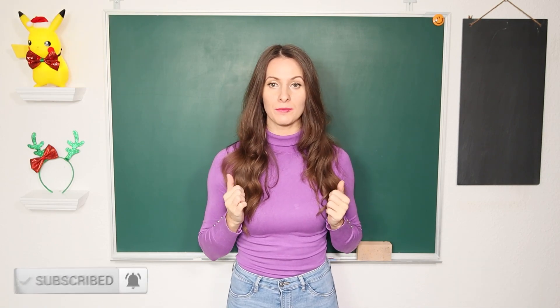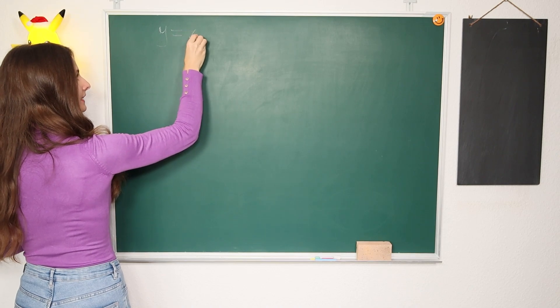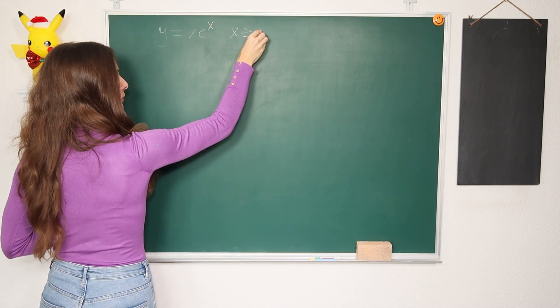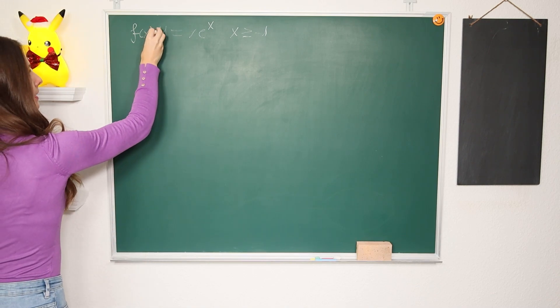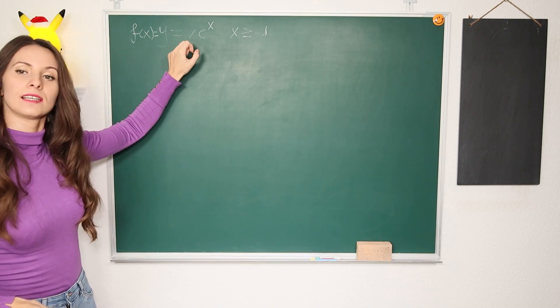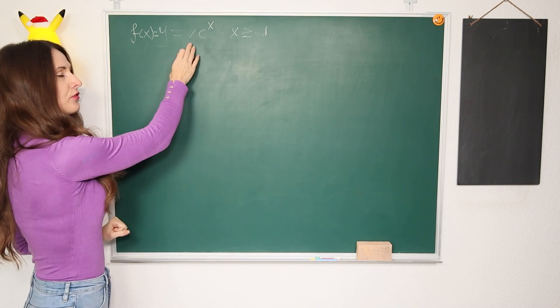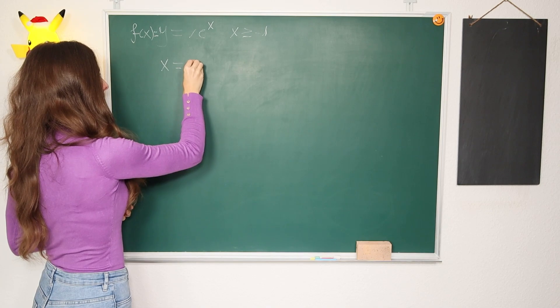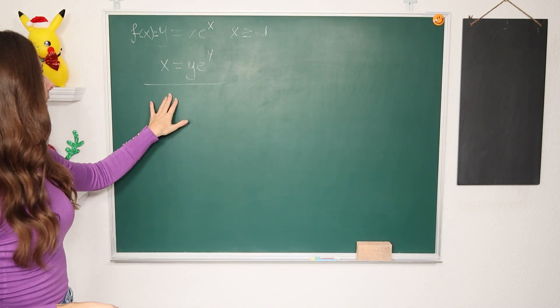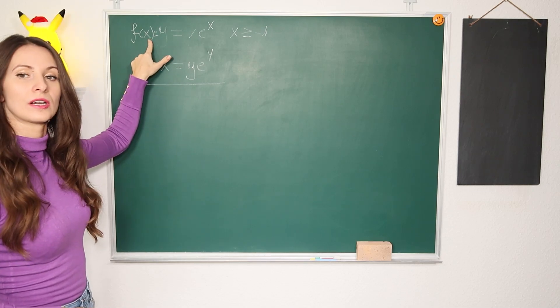Let me show you the most important tool of the Lambert W function we are going to work with. In my previous video, I said the Lambert W function is nothing else than the inverse of the function x·e^x for x greater than or equal to minus 1. So y = f(x) = x·e^x, and the Lambert W function is the inverse of this function.